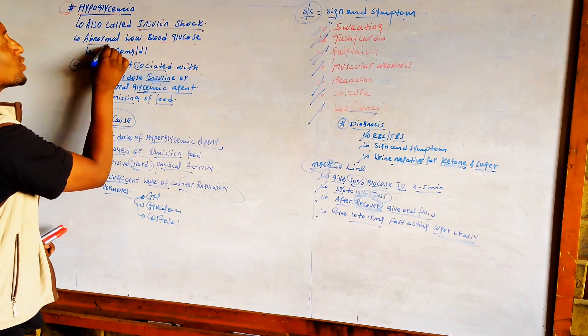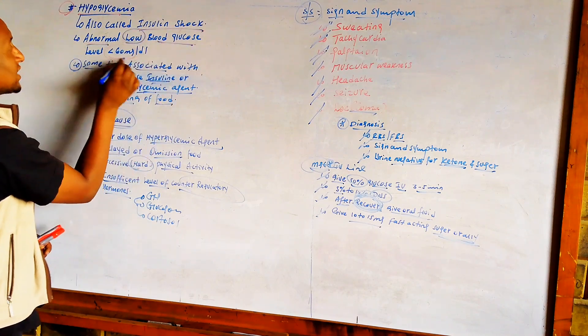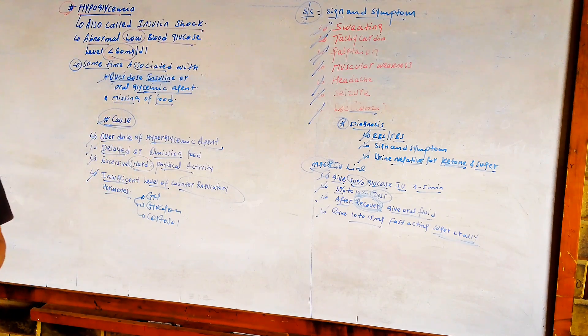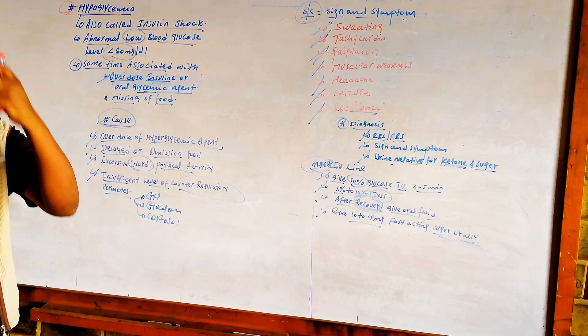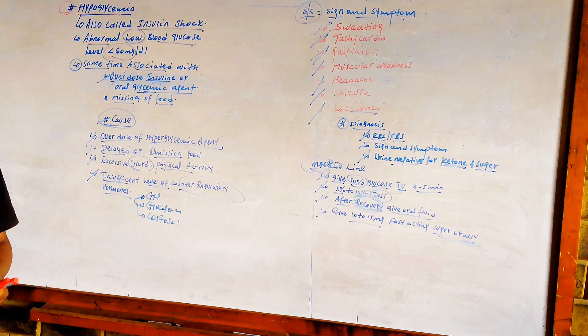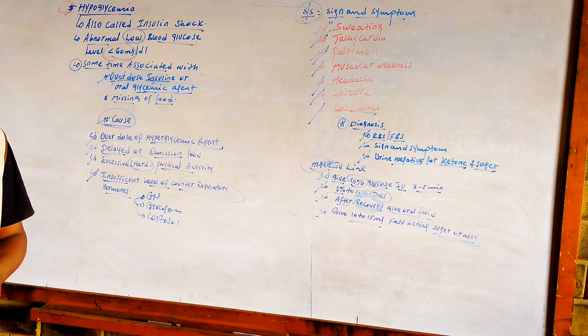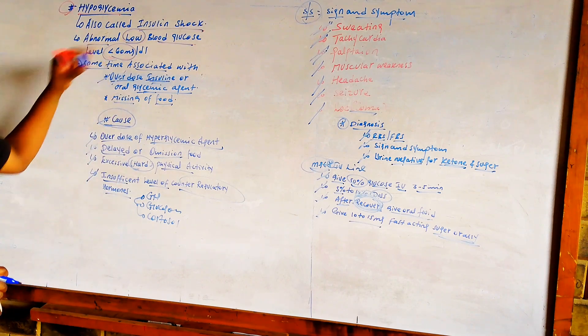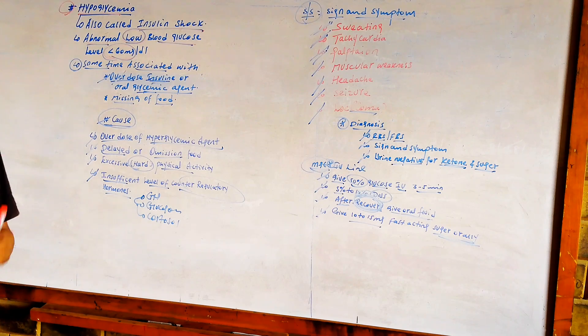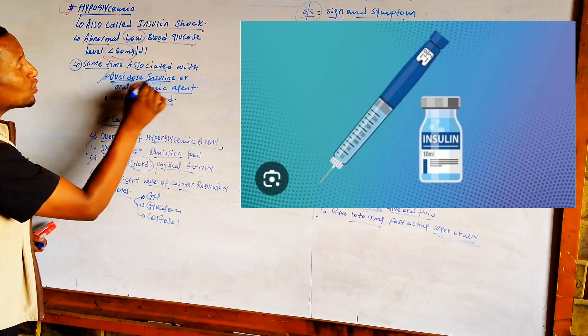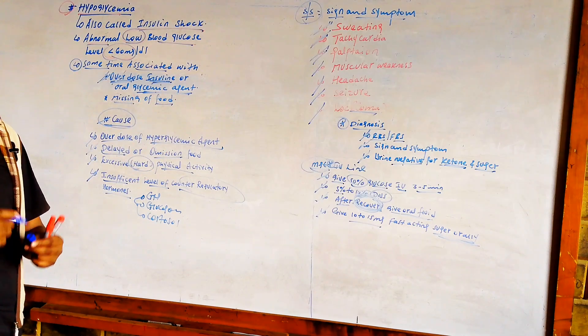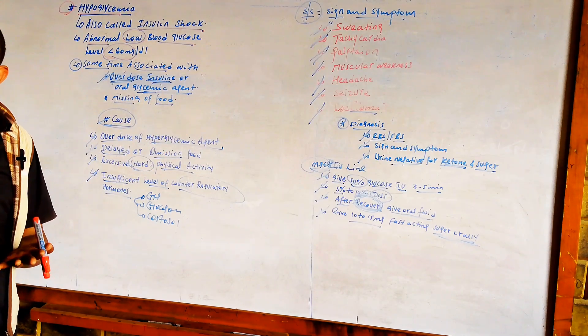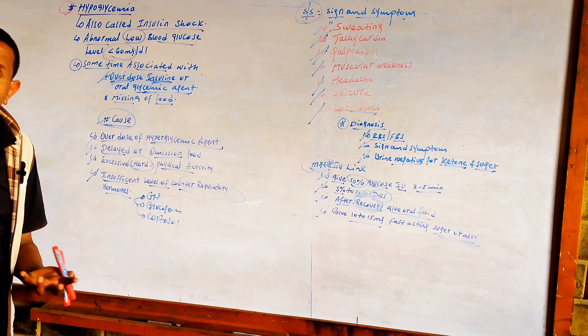Hypoglycemia is a normal low blood sugar level, that is less than 60 mg per deciliter. This hypoglycemia is sometimes associated when a person has an overdose of insulin or other glycemic agents except metformin.